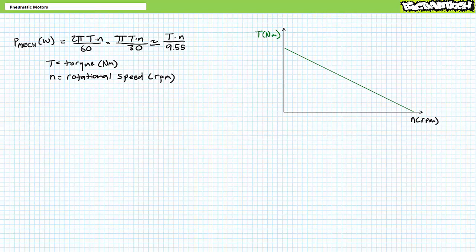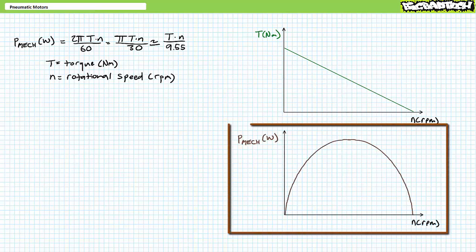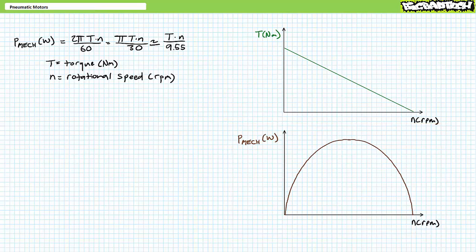One can use the speed torque curve to determine a specific motor's working or operating point. At a specific rotational speed, one can determine the torque, or given a known torque, one can determine the speed. One can also plot mechanical power, the product of torque and speed, as a function of rotational speed on another graph. In the case of a general purpose pneumatic motor, mechanical power output in watts plotted as a function of rotational speed in units of RPM forms an almost symmetrical upside down parabolic arc with peak mechanical power output almost center of mass.